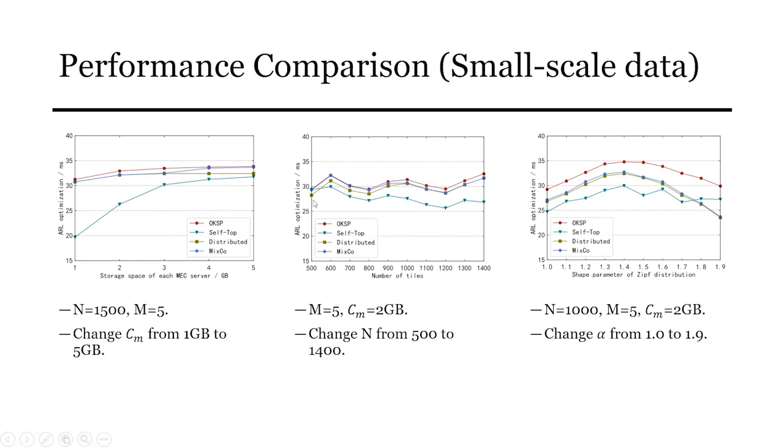For this picture, due to the scattering of the popular tiles and the different popular tiles on each MEC server, the safe-top algorithm performs poorly. As the alpha increases, the popular tiles become more concentrated. That is to say a small number of the tiles occupies the most requested traffic. Thus, the collaboration domain caching of these tiles can bring good profit. As we continue to increase the alpha, despite the overall latency savings, the number of the requests per tile increase is eventually showing a decrease in ARL optimization.